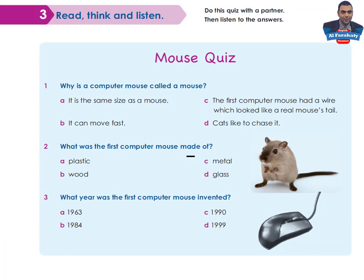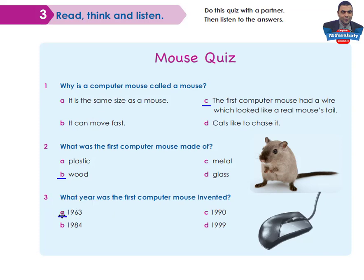Hello again. I'll underline the correct answers and then we will listen to check them. Number one: Why is a computer mouse called a mouse? Because the first computer mouse had a wire which looked like a real mouse's tail. Number two: What was the first computer mouse made of? Yes, B — wood. Number three: What year was it invented? A — 1963. Now let's listen to check our answers.